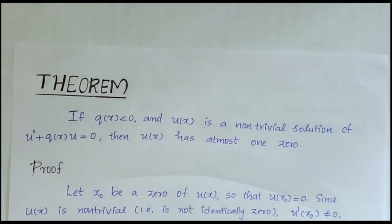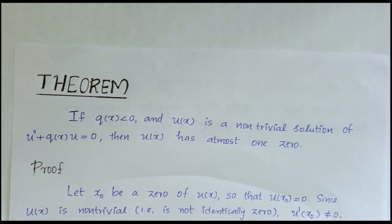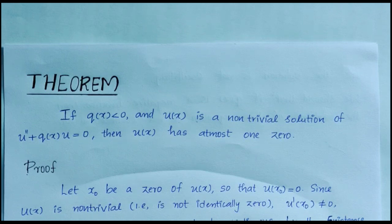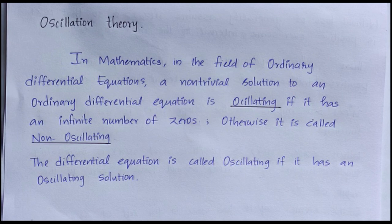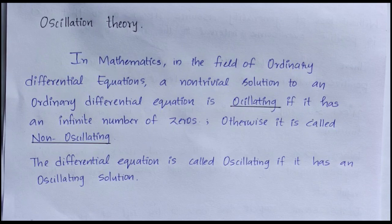Before going to the proof of the theorem, consider the equation u'' + q(x)u = 0. What we are going to prove is that if the function q(x) is a negative function, then the solutions of this equation do not oscillate at all. In mathematics, in the field of ordinary differential equations, a non-trivial solution is oscillating if it has an infinite number of zeros; otherwise, it is called non-oscillating. The differential equation is called oscillating if it has an oscillating solution.